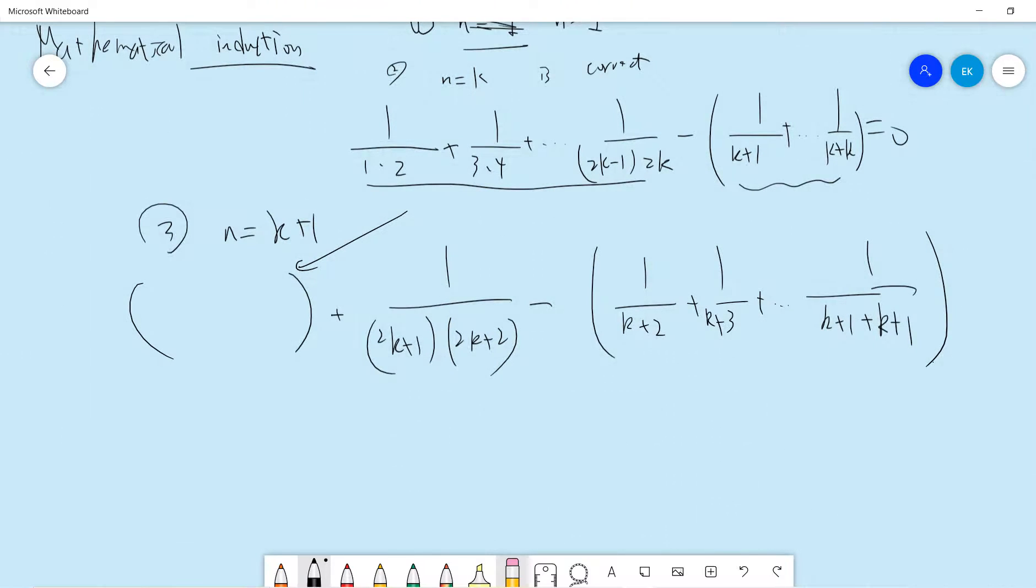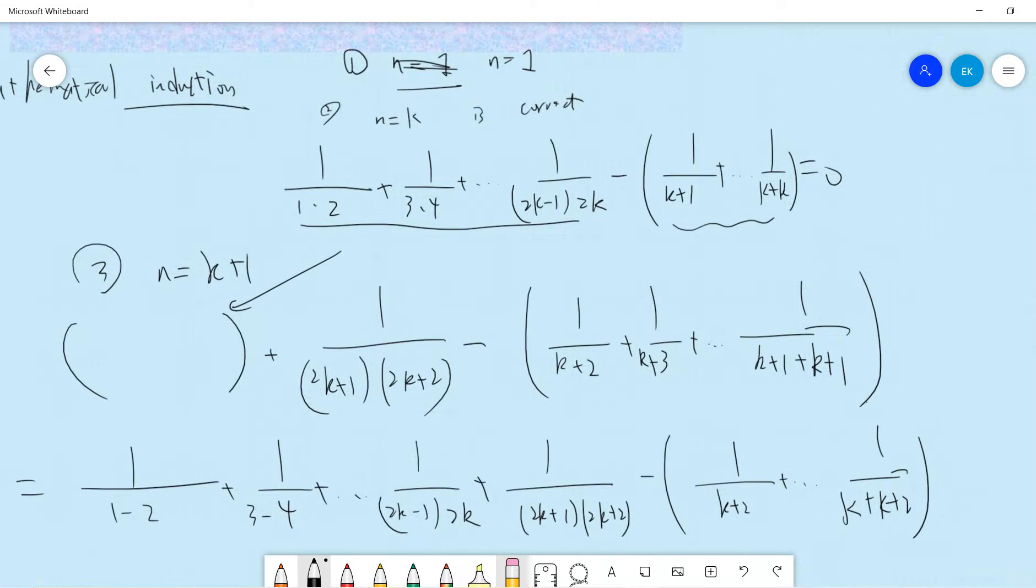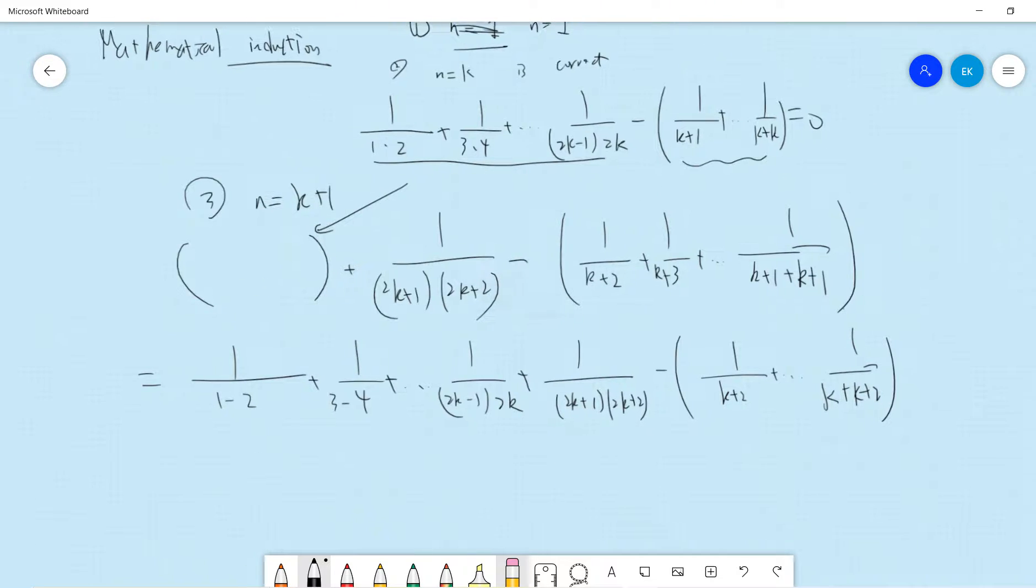So let's write down, so compare, let's write everything down to make sure that we didn't do anything stupid. Plus 1 over 2k plus 1, 2k plus 2, minus 1 over k plus 2, up to k plus k plus 2. Okay, so by our induction hypothesis, we know that this part is the same as this part, right?